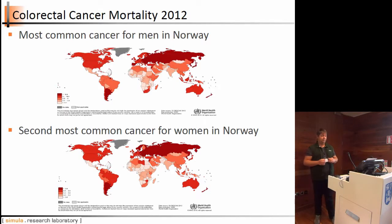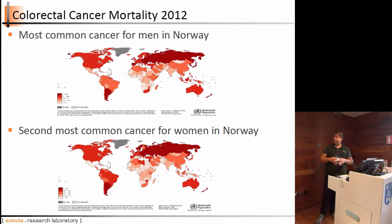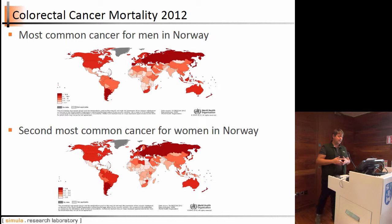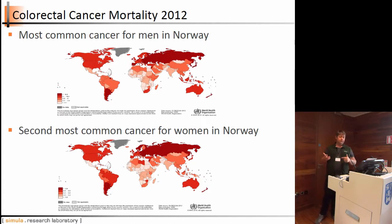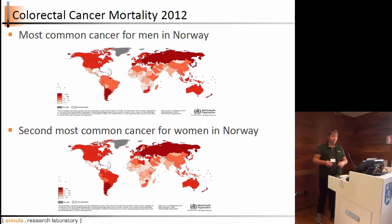This is an example of statistics: colorectal cancer is a very dangerous condition affecting many countries, with a lot of people dying yearly. In Norway, for example, it is the most common cause of death for men and second for women, so it should be addressed in the near future to improve quality of life.